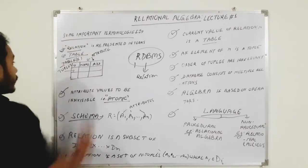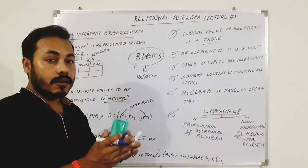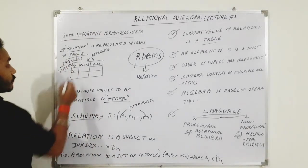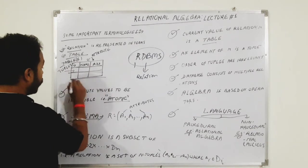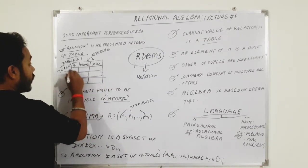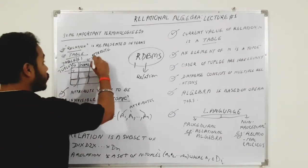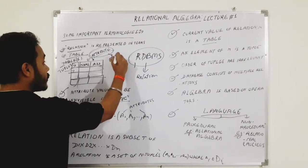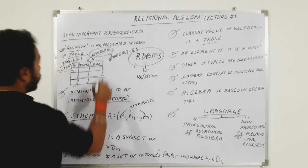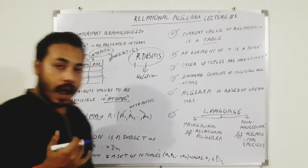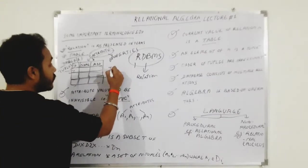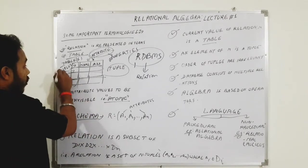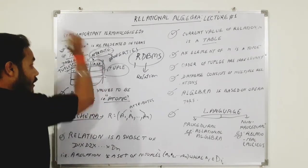When we talk about a table, we mean a cross-section of rows and columns. Rows are horizontal and columns are vertical. Looking at this diagram, these are our rows — horizontal in nature. Columns are also known as attributes; attributes mean properties. The technical term for rows is 'tuple' (T-U-P-L-E). Horizontal values are our tuples; vertical values are our attributes.